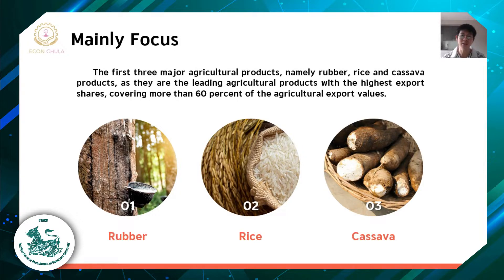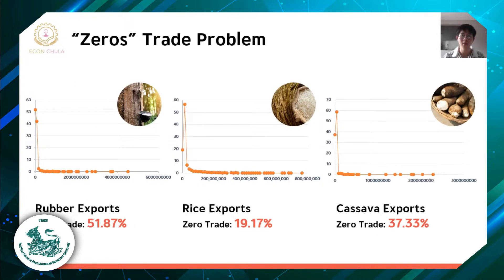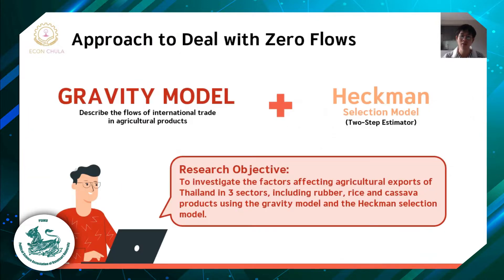This study focused on the first three major agriculture products, namely rubber, rice, and cassava, which are the leading agriculture exports with the highest export share, covering more than 60% of agriculture export value. However, export data provides interesting case studies because trade in agriculture products is often dominated by zero trade flows, meaning that there are many cases where two countries have zero trade for a specific period of time. We use the sample selection or Heckman's selection model to deal with the zero trade flow and take into account the possibility of selection bias.